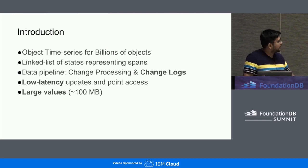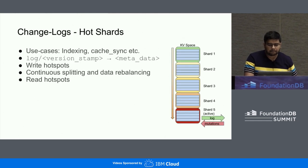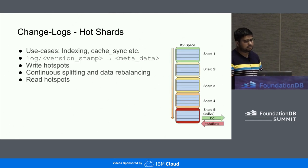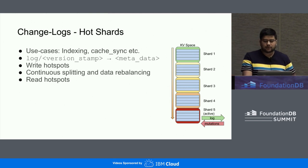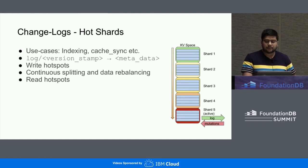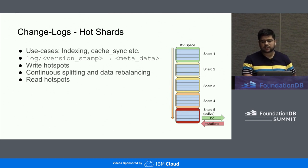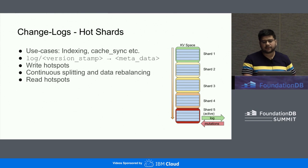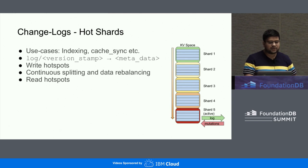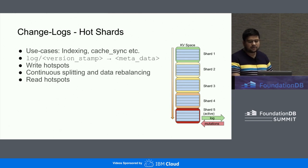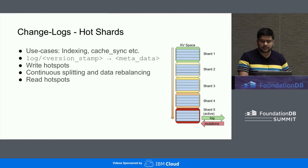Let's take each of these aspects one at a time. First is a change log. These are typically used to provide an ordered feed for all the updates happening in the primary store to other subsystems, which in turn react to these changes by taking some specific actions. For instance, an indexing system could consume the change log for making updates searchable, or a caching system could use this feed to keep itself synchronized. The structure of change log keys in FDB roughly follows this pattern: you have some subspace prefix to isolate these, followed by a version stamp to guarantee uniqueness and strong ordering.